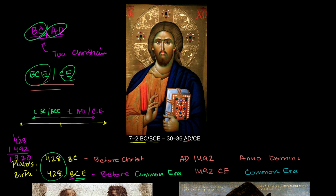In the last video on calendar notation, regardless of whether you're using BC/AD or BCE and CE, there is no year 0. We had 1 BC, and then we had that theoretical birth of Jesus. Most historians don't think he was born right exactly on January 1, 1 AD. Right after 1 BC, you go from December 31st, 1 BC to January 1, 1 AD — there's no year 0.